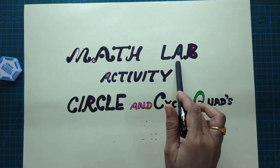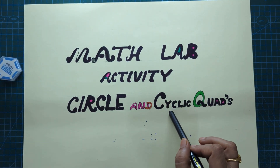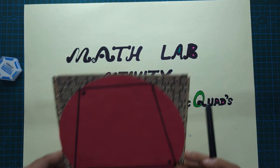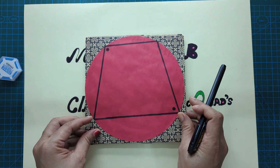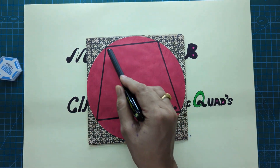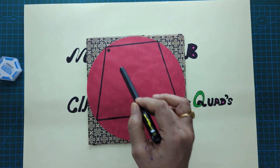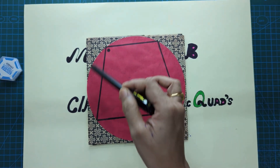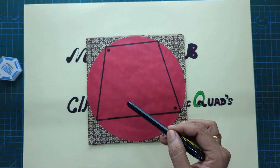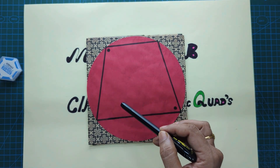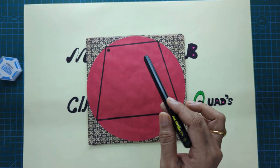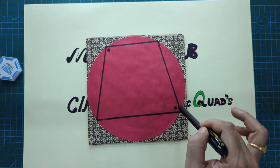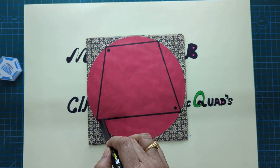The next MATLAB activity is related to cyclic quadrilaterals. What is a cyclic quadrilateral? A cyclic quadrilateral is a four-sided closed figure which is circumscribed inside a circle. Circumscribing means that this quadrilateral's four vertices lie on the circle.